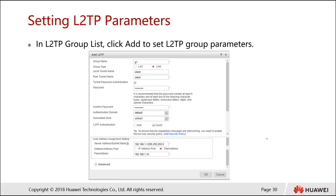Next, we configure the L2TP parameters. We specify a name and set the type to LNS, then type in the tunnel name. Optionally, we can enable tunnel password authentication — this is a shared password and can be set to any value. Then we set the PPP parameters, choosing PAP or CHAP. CHAP is always recommended over PAP. We also associate the interface with the untrust zone.